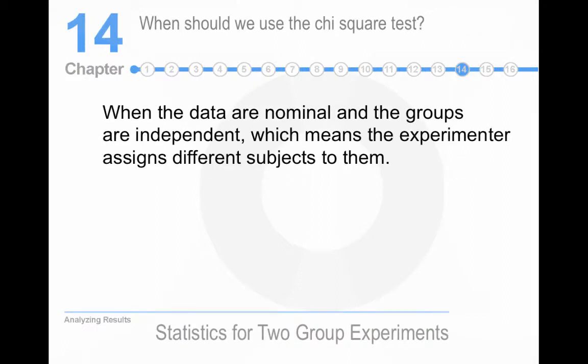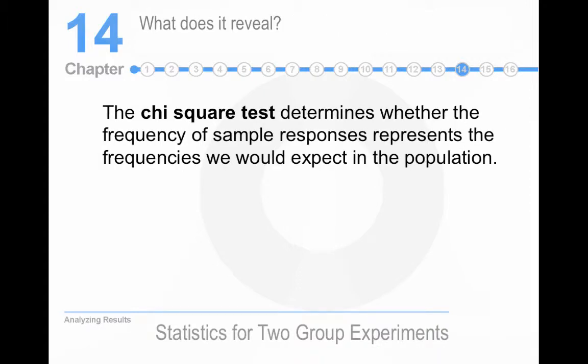So let's start talking about the chi-square test. If the data are nominal and the groups are independent, you use a chi-square. So it's a non-parametric test because it's using nominal data. The chi-square test determines whether the frequency of the sample represents frequencies we would expect in the population.